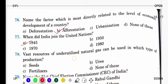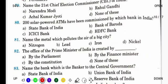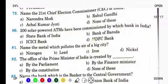Vast resources of underutilized natural gas can be used in which type of production? It is fertilizer. Fertilizers में सबसे ज़्यादा इसको use किया जाता है.